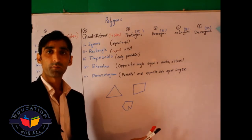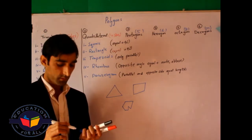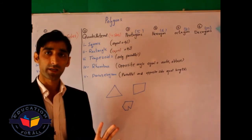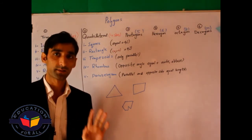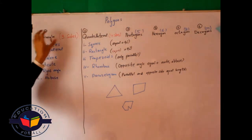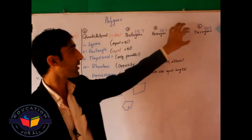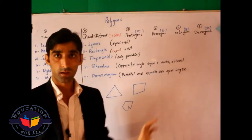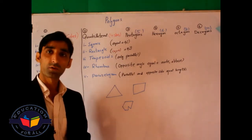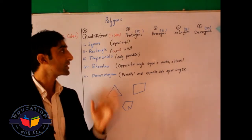There are many types of polygons, but I know some of them. The smallest polygon, which has only three sides, is called a triangle. The types of polygons are: triangle, quadrilateral, pentagon, hexagon, octagon, and decagon. These types have further subtypes, but we are studying only these.